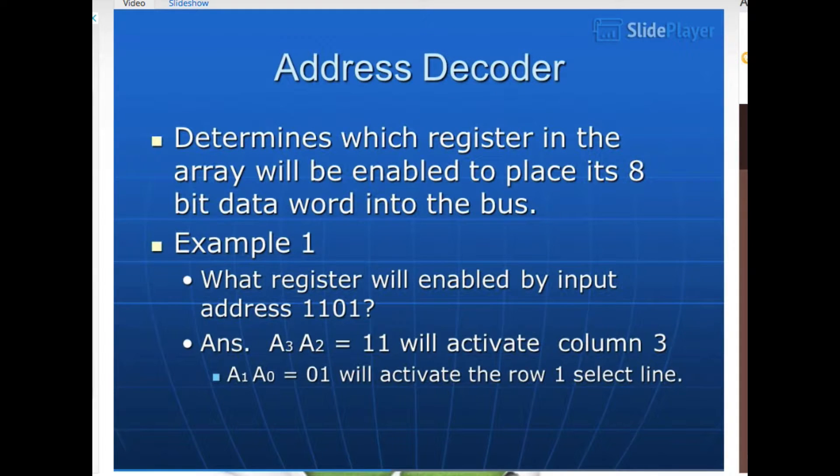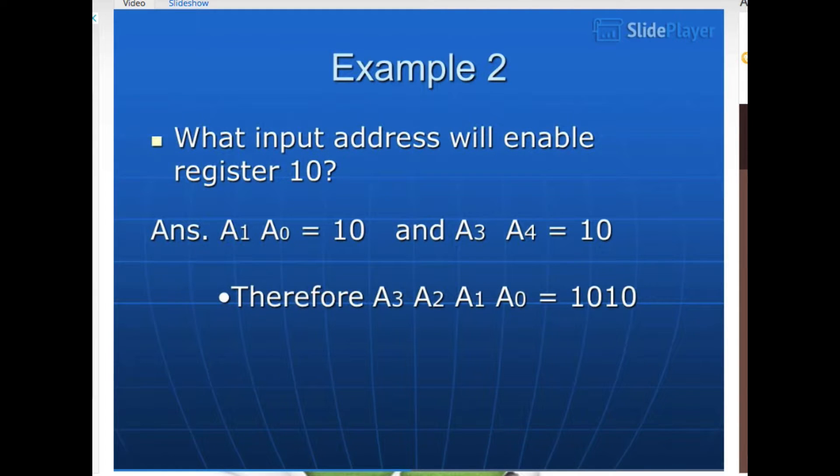Address decoder. Example 1: What register will be enabled by input address 1101? Answer: A3A2 equals 11 will activate column 3. A1A0 equals 01 will activate the row 1 select line. Example 2: What input address will enable register 10? Answer: A1A0 equals 10 and A3A2 equals 10. Therefore A3A2A1A0 equals 1010.